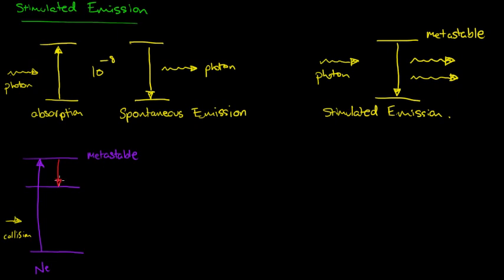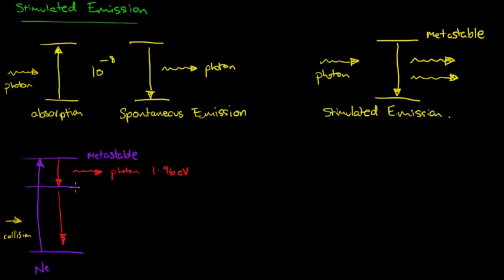When the neon drops down to its ground state, it can actually transition to this in-between state first and emit a photon of approximately — well, that energy transition corresponds to 1.96 eV. It would continue on and transition to the ground state, but we're particularly interested in this transition from the metastable state down to this excited state — still not the ground state transition.